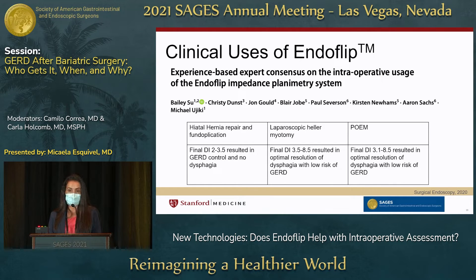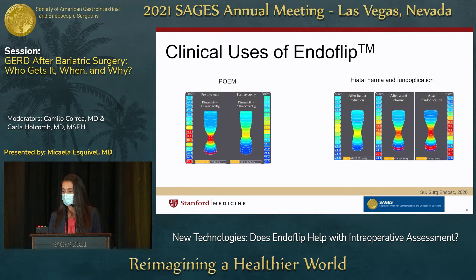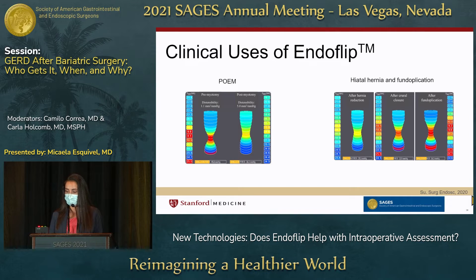It's really exciting that you could, in theory, use these numbers and Endoflip during a procedure to alter the course — make a bigger myotomy, adjust your wrap. Here are images from actual procedures: on the left, pre-myotomy versus post-myotomy in POEM, where you can visibly see lower distensibility pre-myotomy. After hiatal hernia repair and fundoplication, you progressively see from hiatal hernia repair to crural closure to fundoplication a slow decrease in distensibility and diameter.